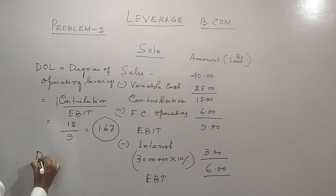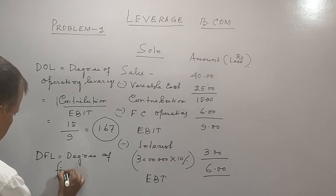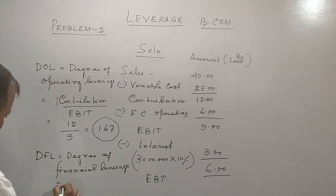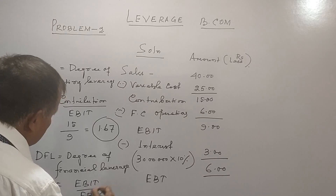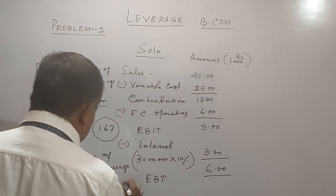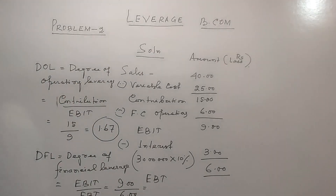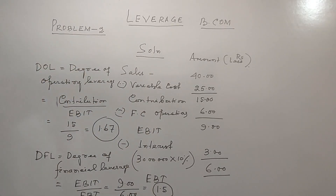Then comes the DFL — degree of financial leverage. The degree of financial leverage formula is EBIT divided by EBT. EBIT is your 9 lakhs and EBT is your 6 lakhs. So 9 by 6 comes to 1.5 times. DOL is 1.67 times and DFL is 1.5 times.